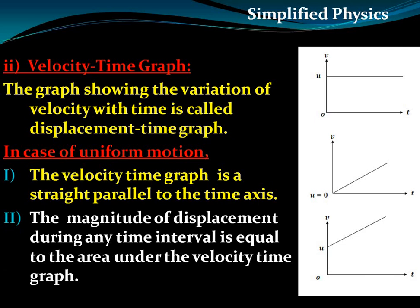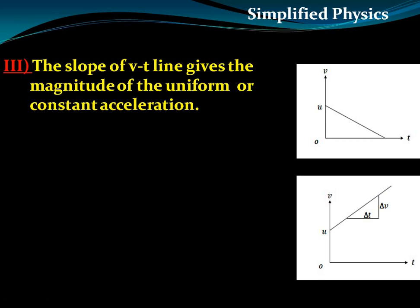The magnitude of displacement during any time interval equals the area under the velocity-time graph — that is, the area under the velocity line and above the time axis gives the displacement. In the case where the initial velocity u equals zero and velocity keeps increasing, the slope of the velocity-time line gives the magnitude of the constant acceleration.